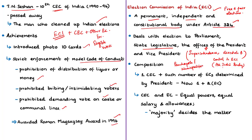Since the Election Commission of India also covers state legislatures, it is an all-India body common to both the central and state governments. However, it is not concerned with elections to panchayats and municipalities — that is the duty of the respective state election commissions. Article 324 says the Election Commission shall consist of the Chief Election Commissioner and such number of other Election Commissioners as the President may from time to time fix. The appointment of the Chief Election Commissioner and other Election Commissioners shall be made by the President.